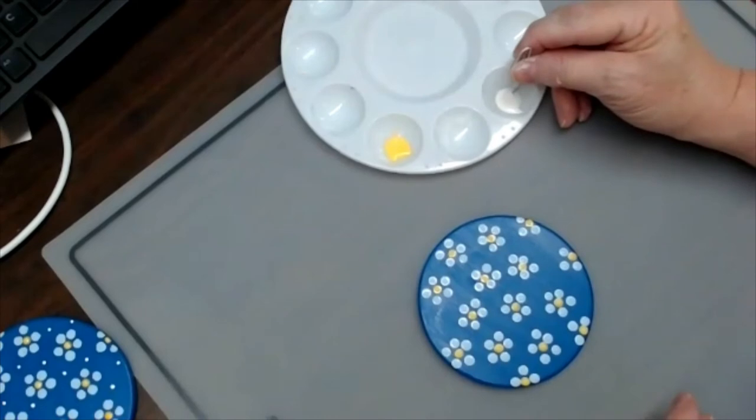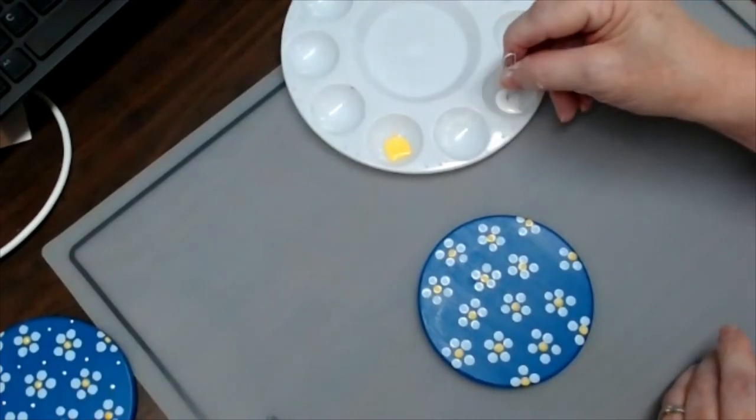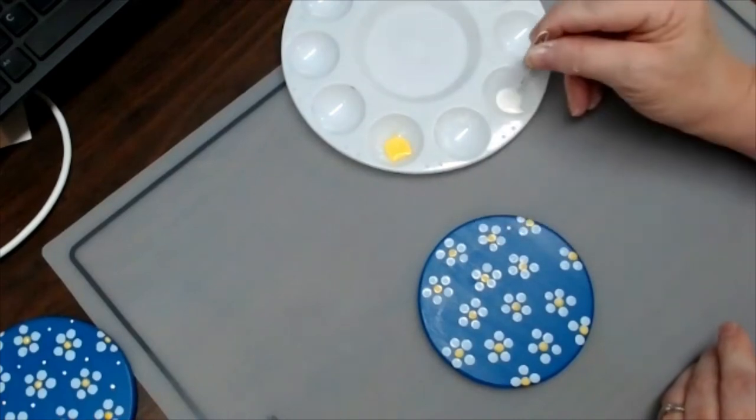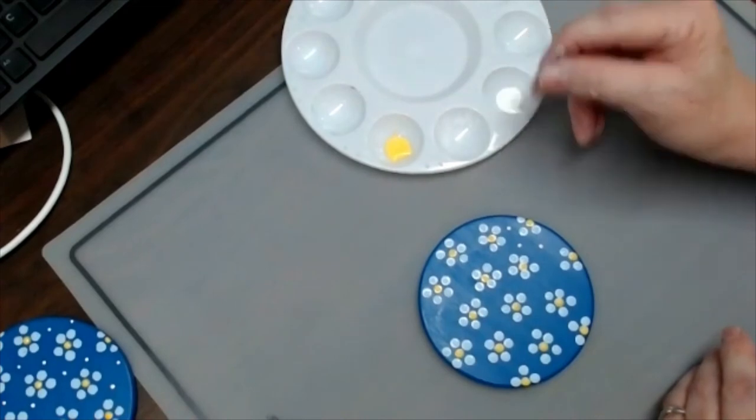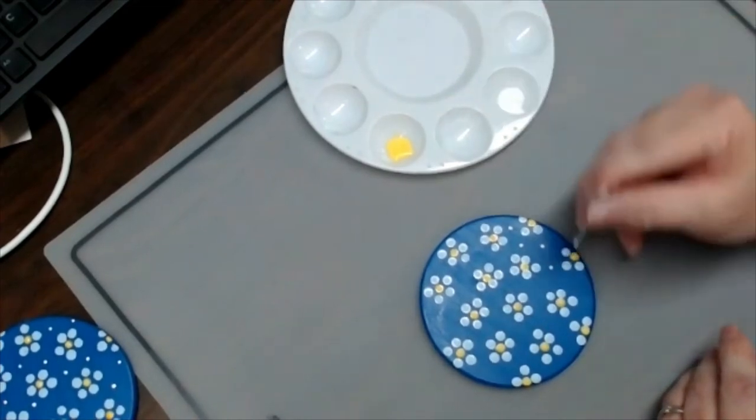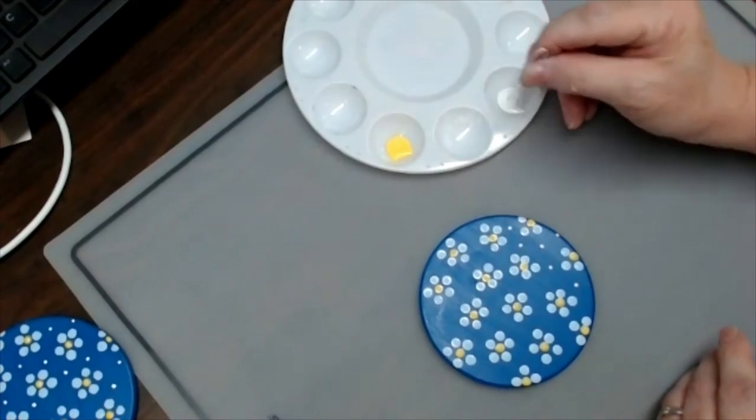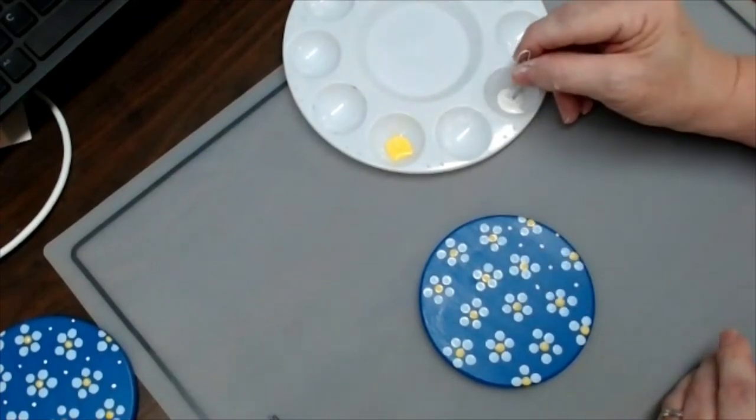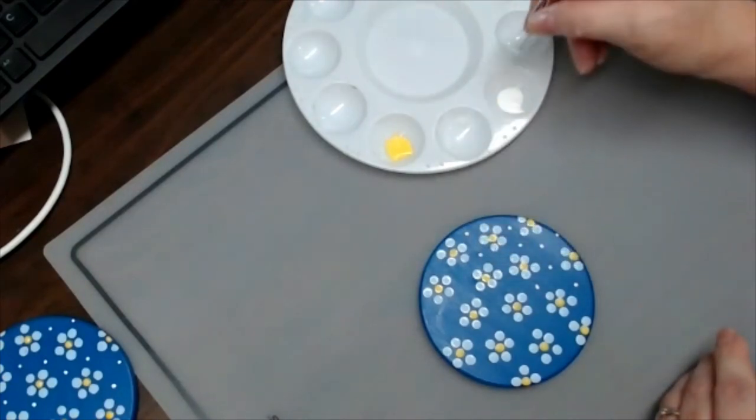All I'm going to do now is come in with my paper clip, same thing, straight up and down with the design, and come and start fill in some of that empty space. I'm not really looking to put a lot of dots in. I just want to break up the blue. That way it's visually more interesting.